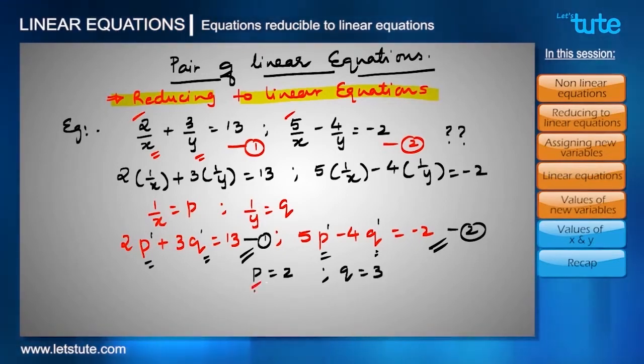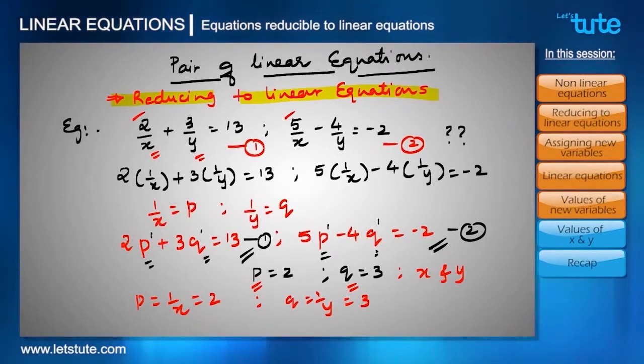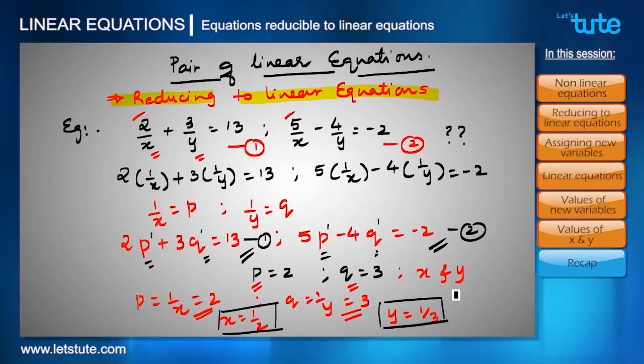But our aim is not to find the values of P and Q. We have to find the values of x and y. So here we already taken P for 1 by x and we got P as 2, so 1 by x becomes 2. Similarly, we have taken Q for 1 by y and we got Q as 3, so 1 by y will become 3. Since 1 by x is equals to 2, we can easily say that x is equals to 1 by 2. And since 1 by y equals to 3, we can easily say that y equals to 1 by 3. So finally we got the value for x and y.